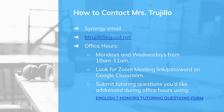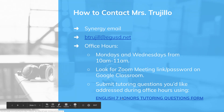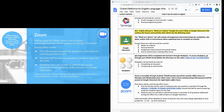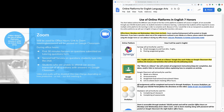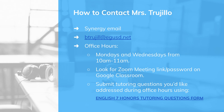Finally, how to contact me. Right now the best way to contact me is through Synergy email or directly through my EGUSD email address. If you have a question that needs answered right away, that's the best way to reach me. If you have a question about an assignment, I'd prefer you wait until office hours so other students with the same question can benefit from hearing the answer. Those questions can be submitted through the English 7 Honors Tutoring Questions form, accessible through the link on the online platforms handout. Any other questions, please feel free to email me.